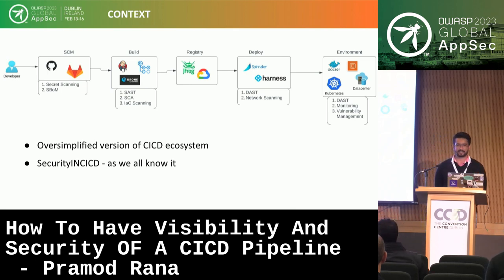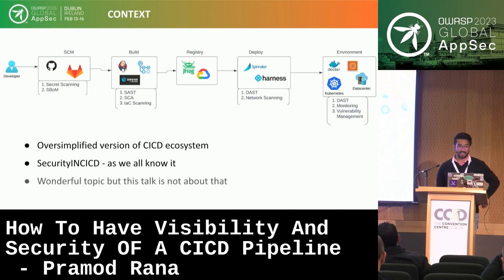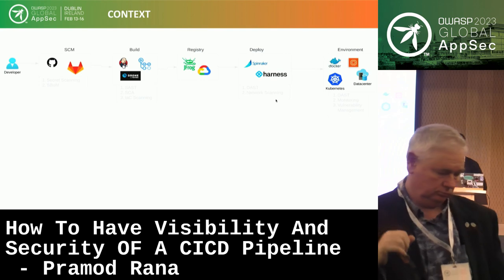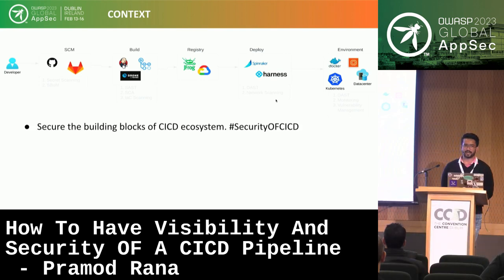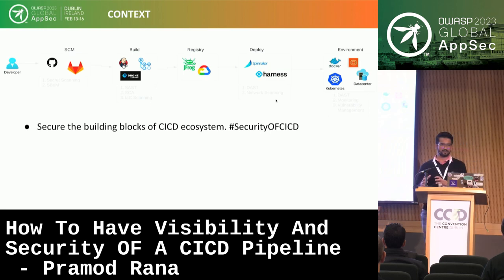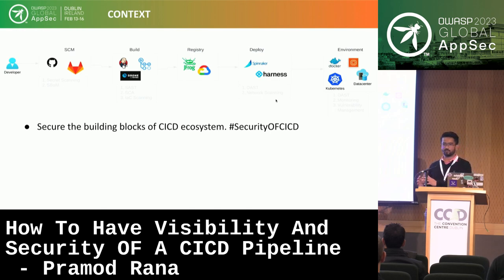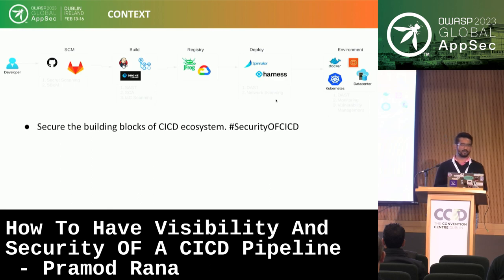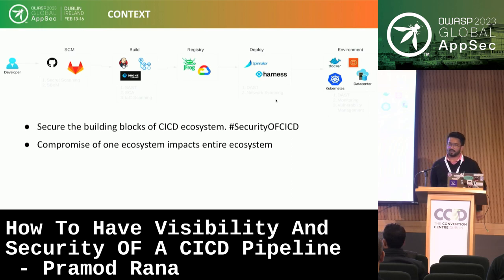That is security in CI/CD as we all know it — a very interesting topic, but that's not what I'm talking about today. Today I'm going to talk about the building blocks of a CI/CD ecosystem and how we can approach the security of those. We have a number of tools and technologies making up a CI/CD ecosystem across the industry, and most of the time those technologies fall into more than one category. For example, GitHub started as an SCM but with GitHub Actions, they are now in both continuous integration and continuous deployment. As with any ecosystem, even a compromise of the smallest piece impacts the entire space.